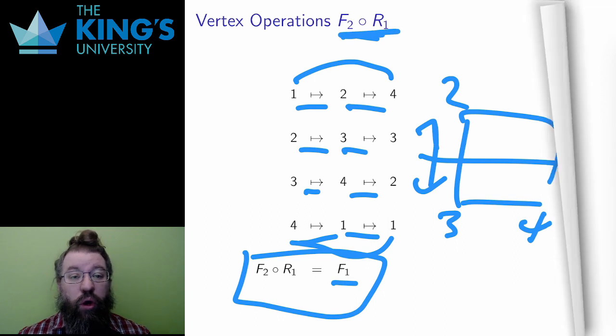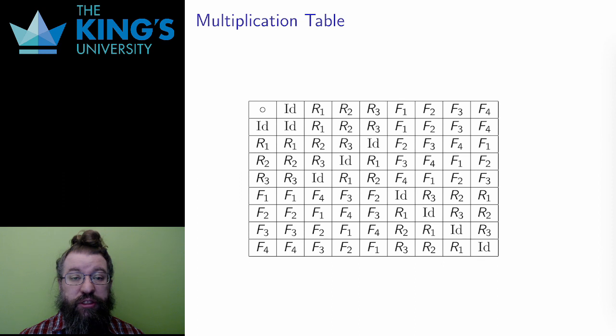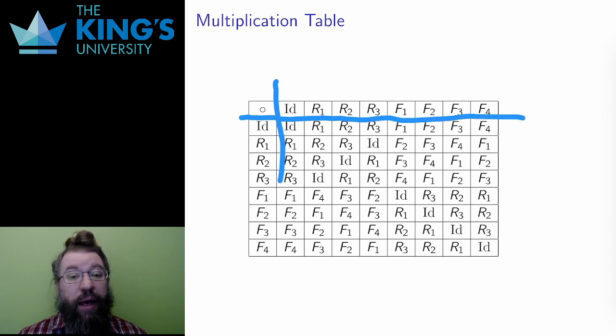If I do all the possible calculations in this group with the vertex operations, I get this. This is a multiplication table. Much like the multiplication tables you would have studied for numbers, but now, this is a multiplication table for the group D4. And every group has a multiplication table, and the multiplication table completely describes the structure of the group.